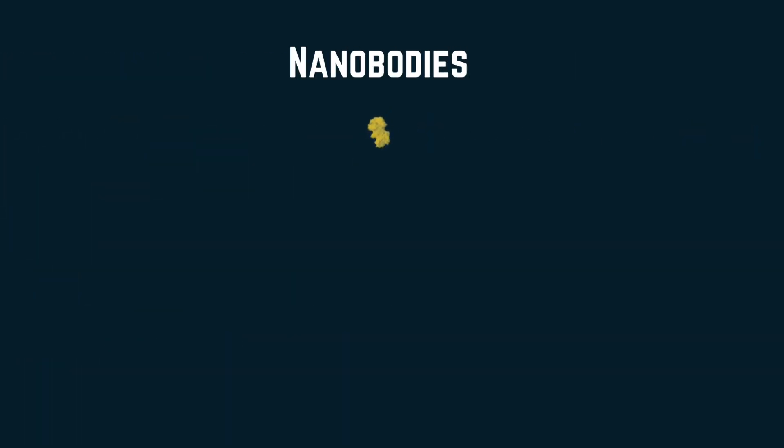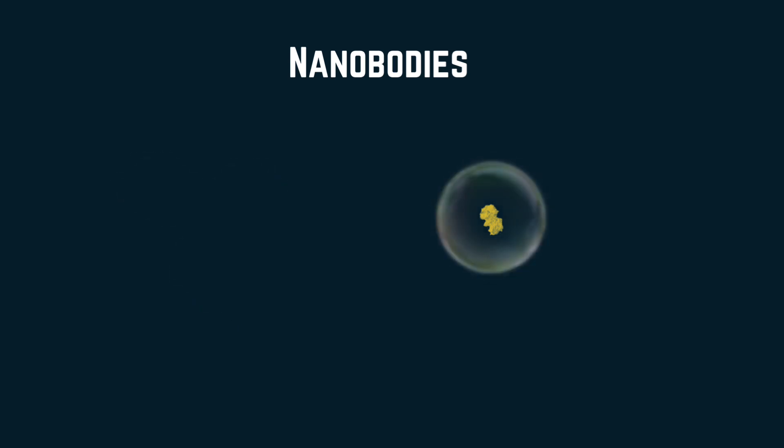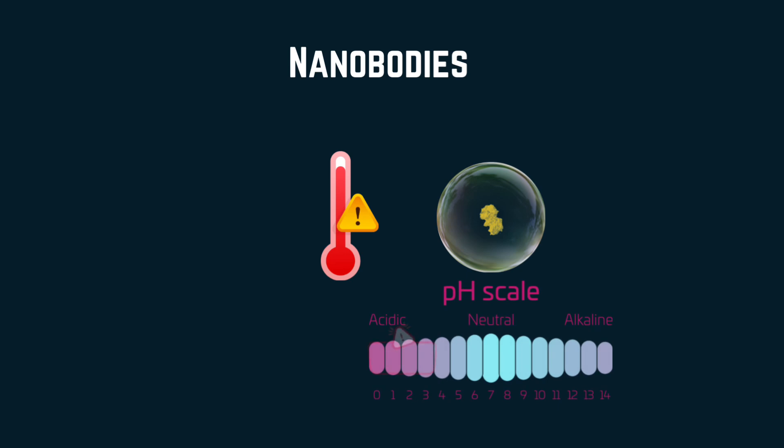Now, let's talk about nanobodies. Nanobodies are single-domain antibodies derived from heavy-chain antibodies found in camelids. Nanobodies are significantly smaller than antibodies. They are extremely stable, as they are able to withstand high temperature, low pH, and harsh chemical environments.